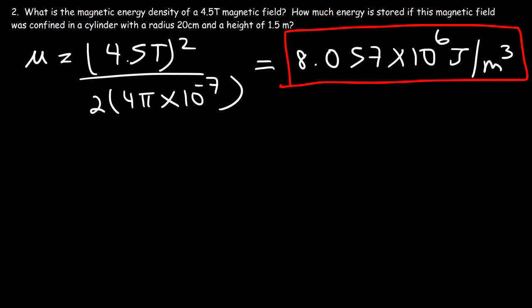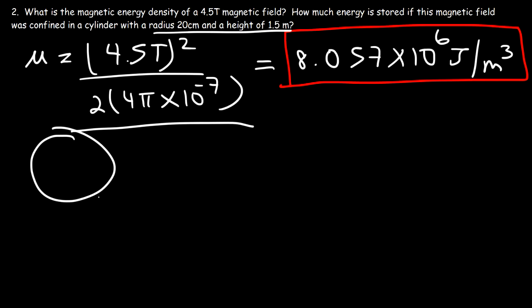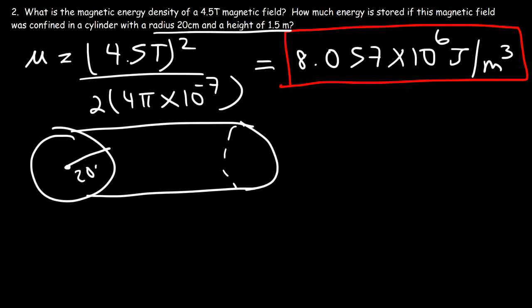Now let's calculate the energy stored in this magnetic field if it's confined in a cylinder. We have a horizontal cylinder where the radius is 20 centimeters and the height is 1.5 meters.